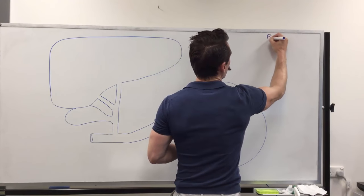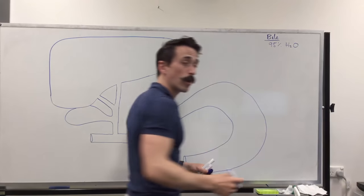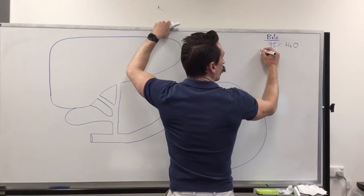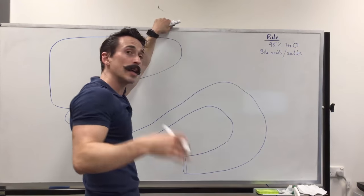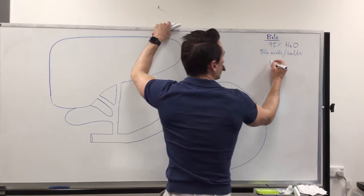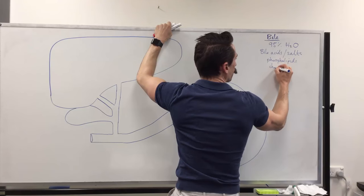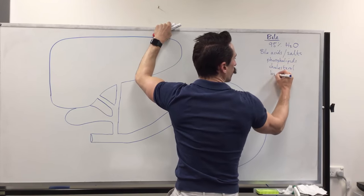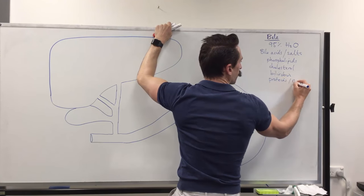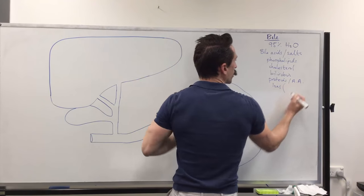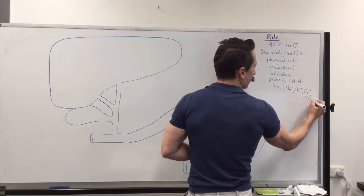When we look at bile itself, bile is comprised 95%, so most is water. Most of bile is water. Then if you look at its components from what I believe to be most important is the bile acids and bile salts. I'll talk about the similarities and differences of that in a sec. That's actually going to constitute most of this quick video. What else? We've got phospholipids. We have cholesterol. We have bilirubin, which is a breakdown product of red blood cells. We have proteins and amino acids. And we also have ions. And the most important ions that you'll find in bile include sodium, potassium, chloride, and bicarbonate.